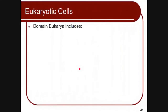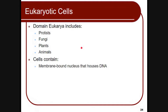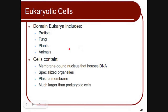Eukaryotic cells belong to the domain Eukarya, which includes protists, fungi, plants, and animals. The cell contains a membrane-bound nucleus that houses the DNA. The nucleus has a nuclear membrane and specialized organelles, making eukaryotic cells more advanced than prokaryotic cells. They also have a plasma membrane as the boundary of the cell, and they are much larger than prokaryotic cells.